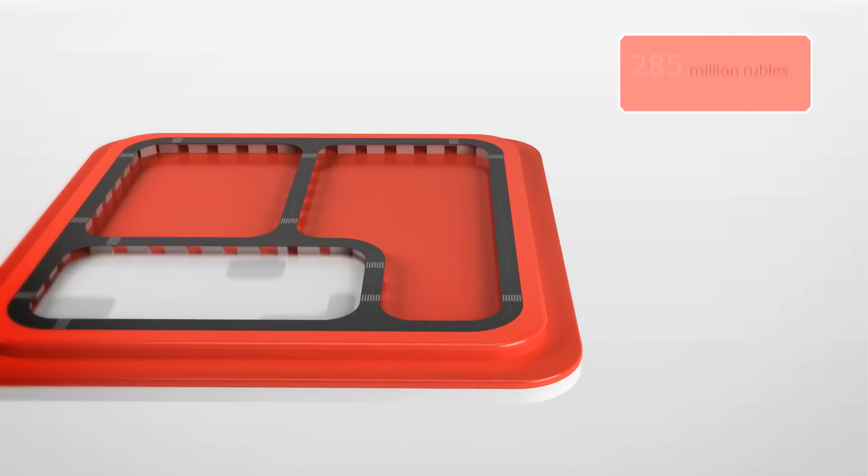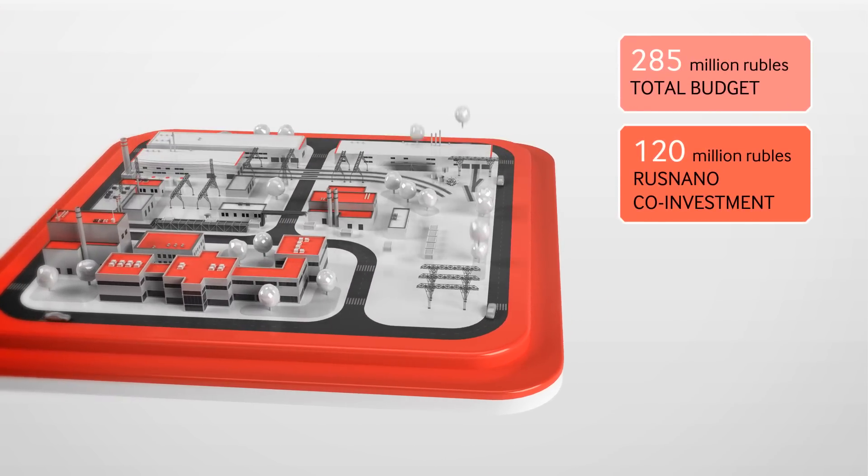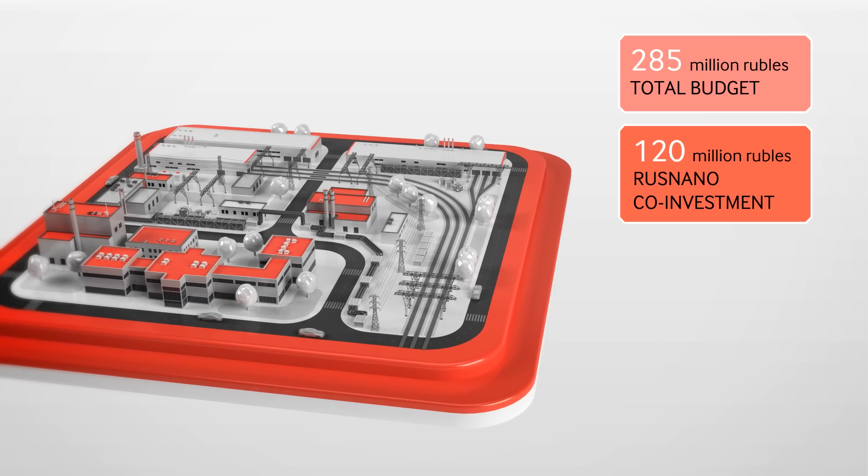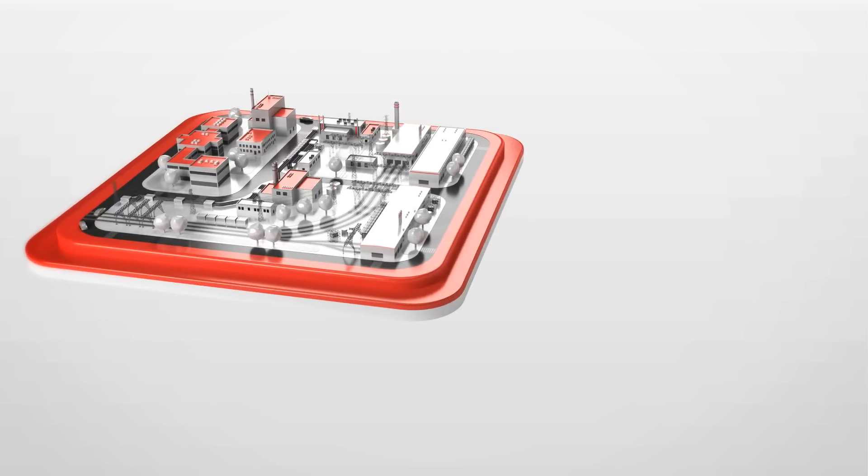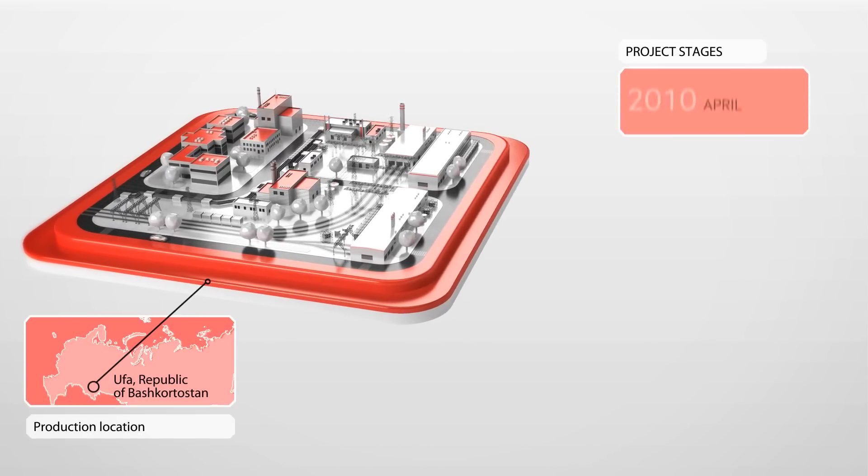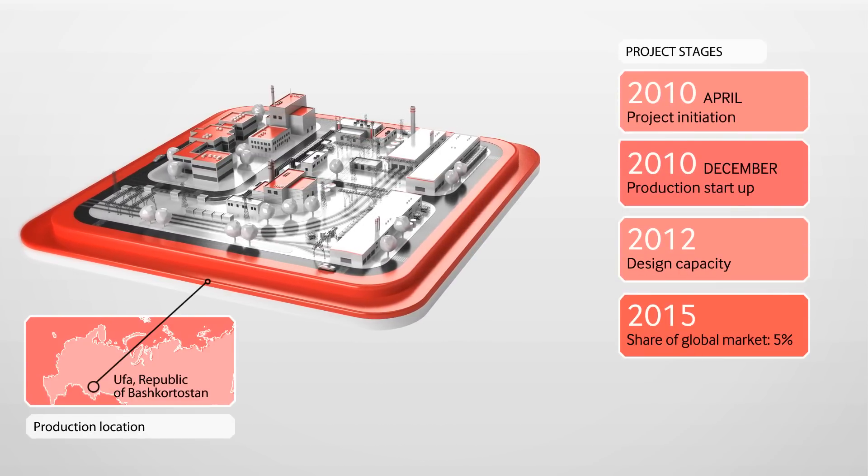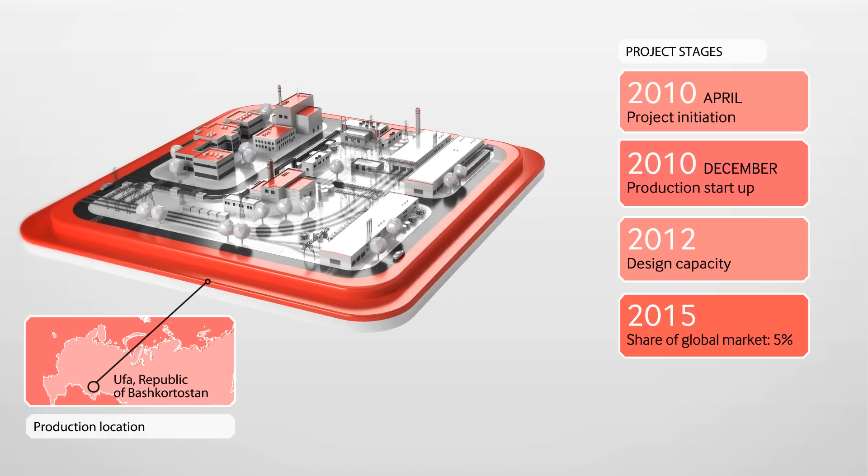Rosnano has invested 120 million rubles in the project. The factory in Ufa was commissioned in late 2010. By 2015, the Bashkortostan facility is expected to produce not less than 5% of the electrochemical machinery sold worldwide.